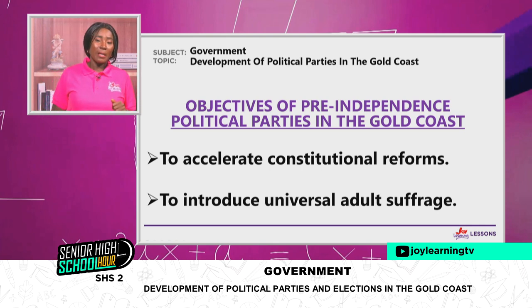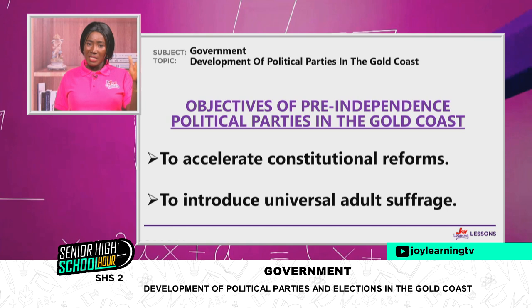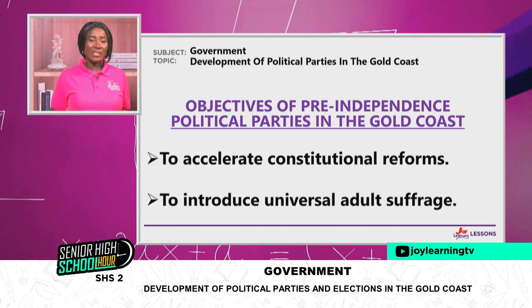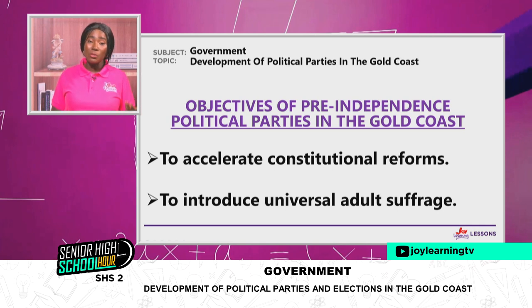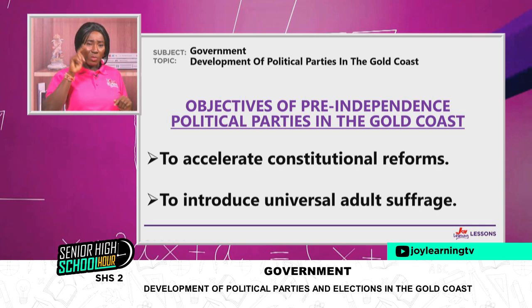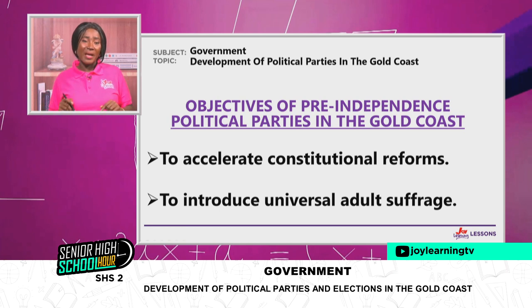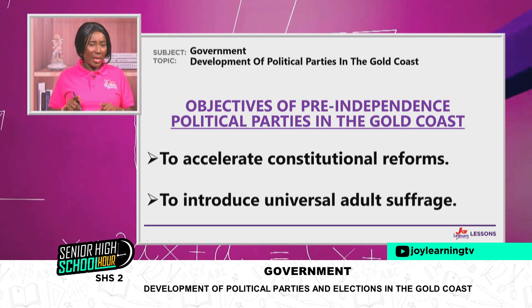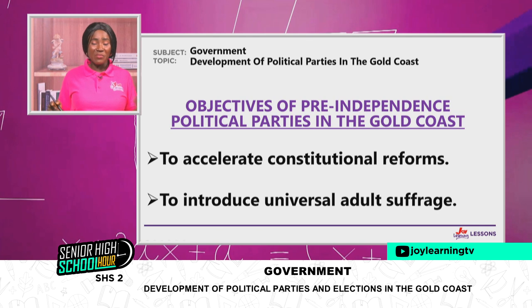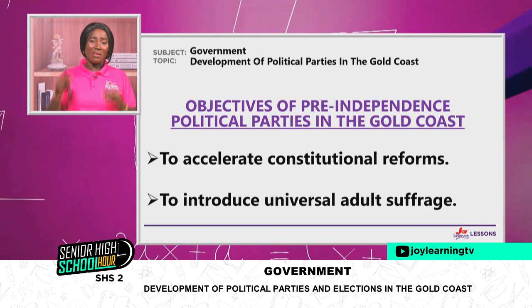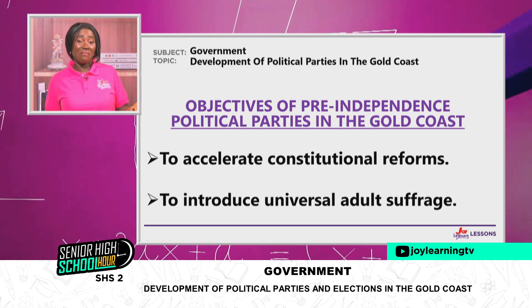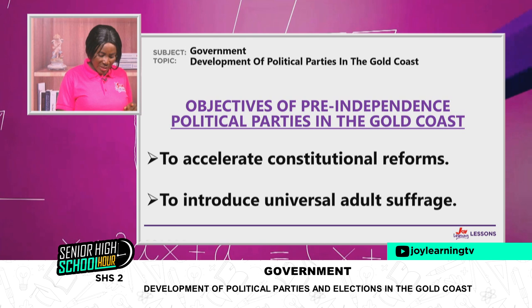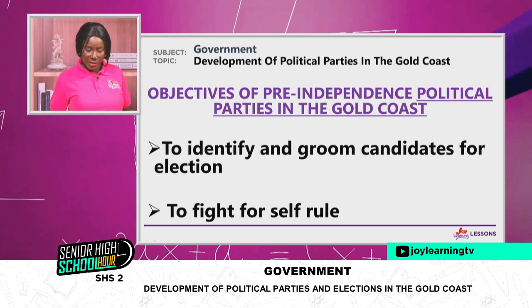Another objective was to introduce universal adult suffrage. At that point, universal adult suffrage was pegged at 21 years. Guggisberg's constitution allowed what we call the elective principle that allowed people to go to the polls. But even that had a question mark — who was qualified to vote? — and it did not give people so much advantage in exercising their franchise.